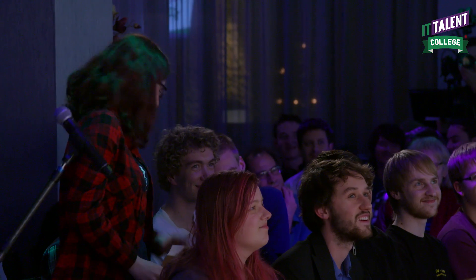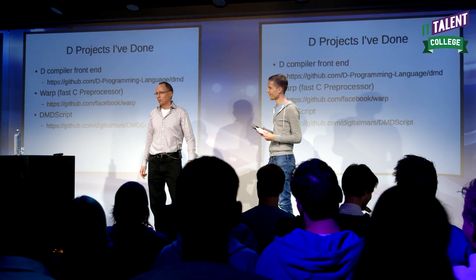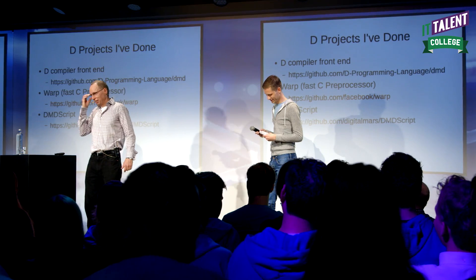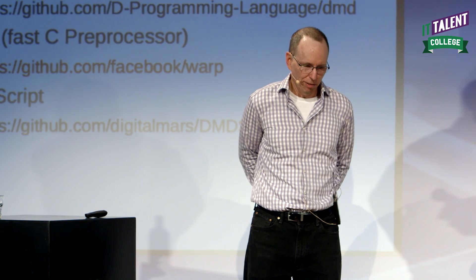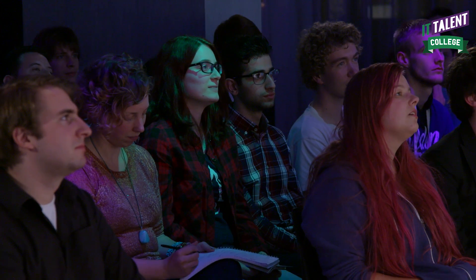Why did you call the D programming language D? Well, that is a great question. It started out as the Mars programming language. Digital Mars was my company, so it's the Mars programming language. I thought Mars is a cool name. And when I described the language to people, they would always laugh and say, oh, it's D — you know, C, C++, D — so it's D.